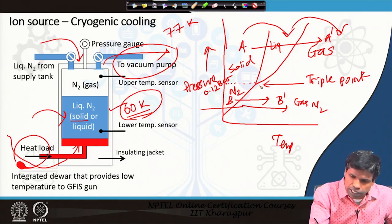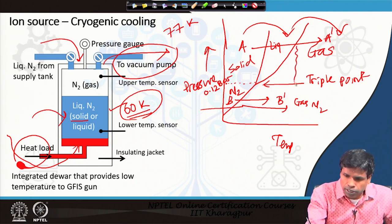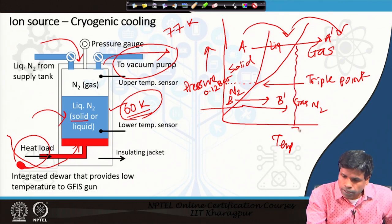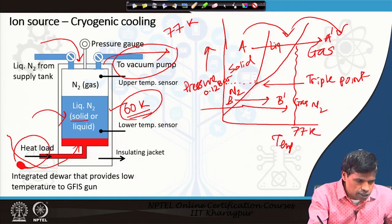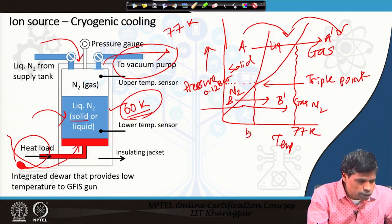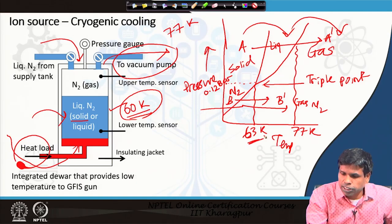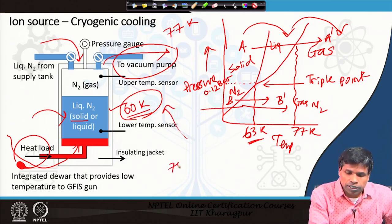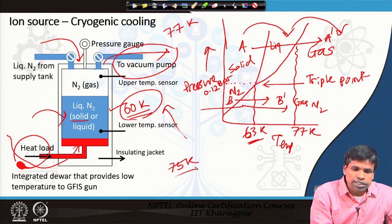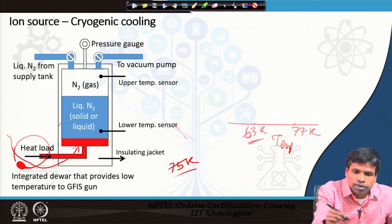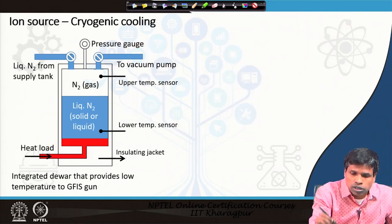At the triple point the temperature is around 63 Kelvin, and at liquid nitrogen conditions around 77 Kelvin. By using solid nitrogen, we can achieve a temperature of around 75 Kelvin at the ion gun source. The source in the helium ion microscope is therefore cooled to solid nitrogen temperature, and solid nitrogen is used for the cooling purpose.